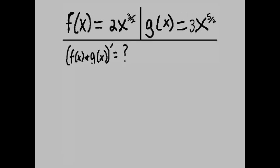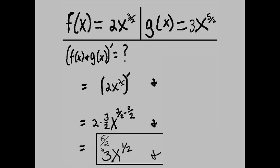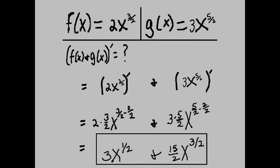Next problem: f of x equals 2x to the 3 halves power, g of x equals 3x to the 5 halves power. Add the two and take the prime. We get 2 times 3 halves x to the 1 half power, which equals 3x to the 1 half power, plus 3 times 5 halves x to the 3 halves power, which equals 15 halves x to the 3 halves power.